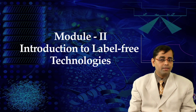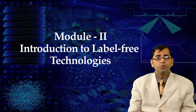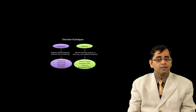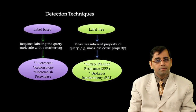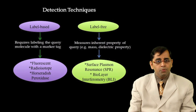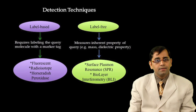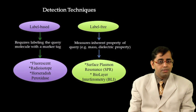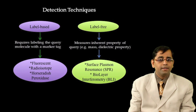The next module focuses on some of the most widely used label-free biosensors for studying protein-protein and protein-small molecule interactions. Label-based techniques commonly involve tagging a protein sample using a fluorescent, chemiluminescent, or radio label, etc. While label-free techniques utilize the physical property of a molecule, such as change in mass or dielectric property, for detection.